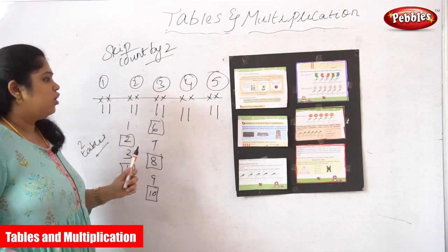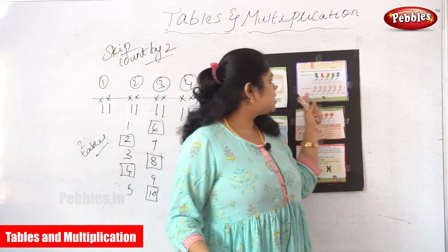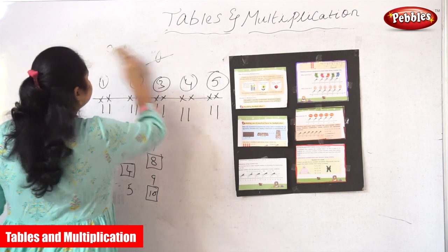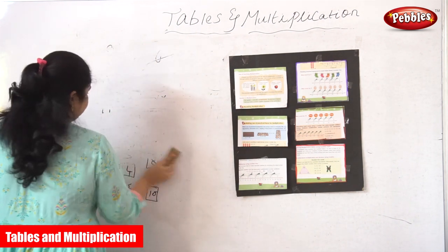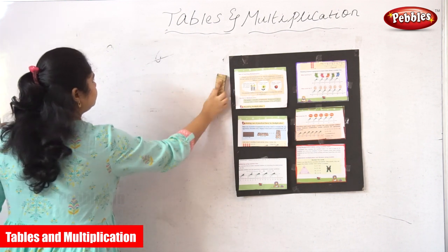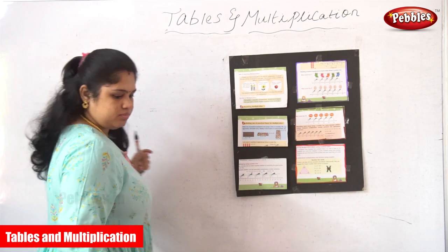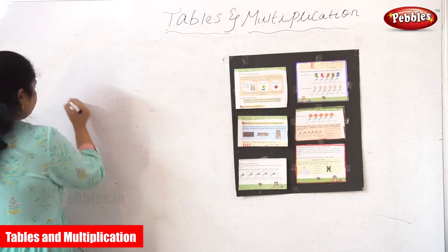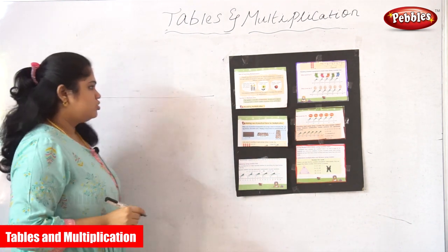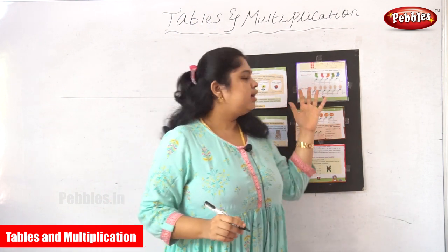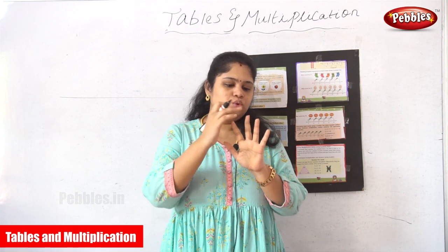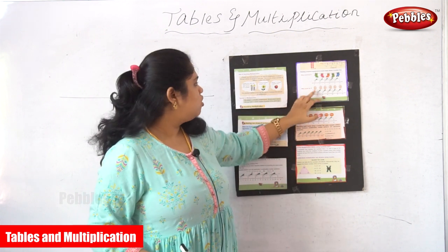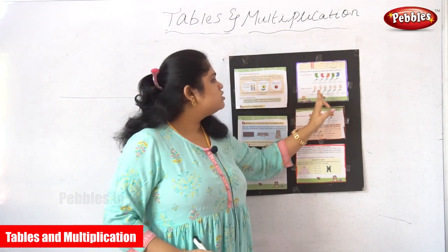Next I'm going to tell you about skip count by five, which is nothing but the five times table. For skip count by five, they give the example of one hand. One hand has one, two, three, four, five fingers. In the picture there are one, two, three, four, five, six hands.